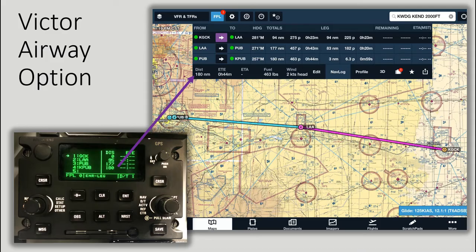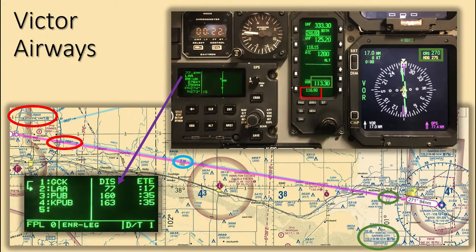Ensure the waypoints are in order and the total distance matches the planned distance. Victor 10, circled in blue, connects the Garden City and Lamar VORs. The total distance between the two VORs is 94 nautical miles. To fly this Victor Airway, have the Garden City VOR frequency, 113.3, circled in green, set as the primary frequency in the RMU, and have 270 set in the HSI course select window. At the halfway mark, 47 nautical miles from the Garden City VOR, set the Lamar frequency, 116.9, circled in red, as primary in the RMU, and set 268 — the reciprocal of 088, also circled in red — in the HSI course select window.